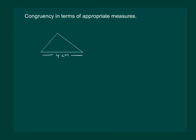Let us learn another method of proving congruency of triangles by use of appropriate measures. Say we have a triangle and we have to make a triangle which is congruent to this one. We have already found that giving the length of one side is useless and more information is required to draw a congruent triangle. So, if I give you one of the angles on this line, still it won't be possible for you to draw a unique triangle congruent to the given triangle.